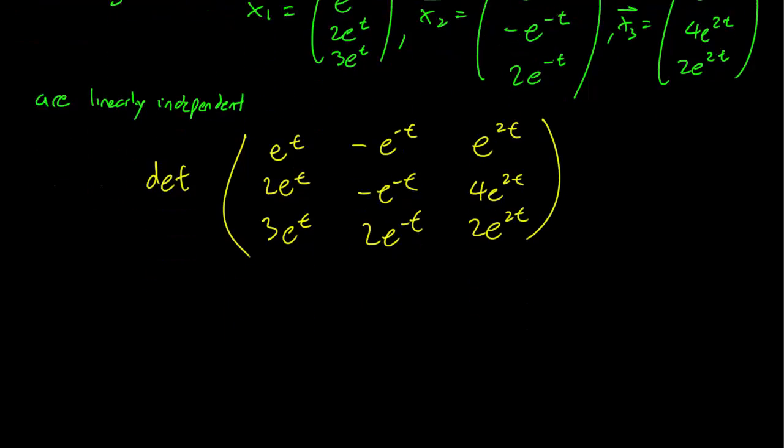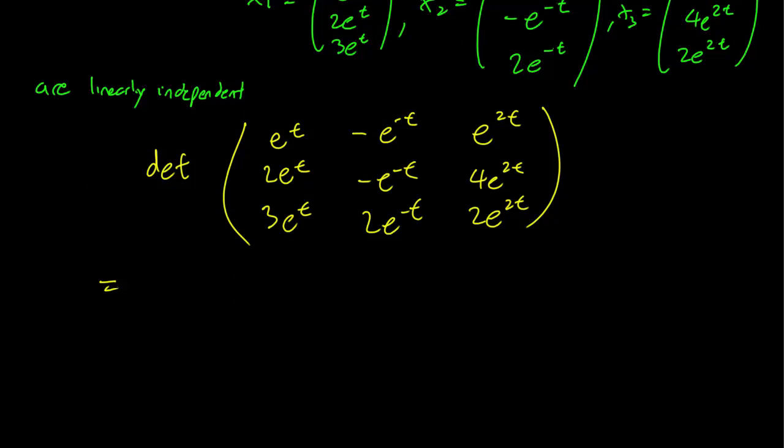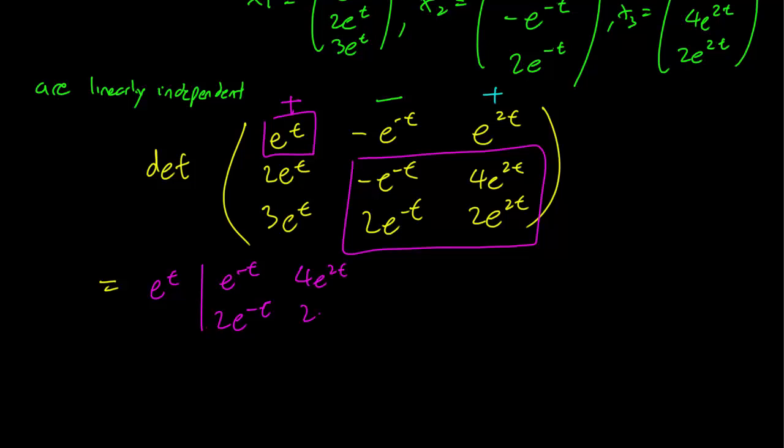And what remains is simply to take determinants. So let's do that color coding again - plus, minus and plus. Alright, so for the first term we have e^t and we are going to take the determinant of that matrix. So it's going to be e^t. That's the first term.